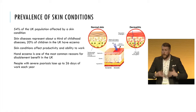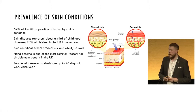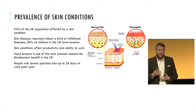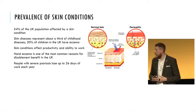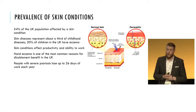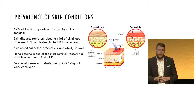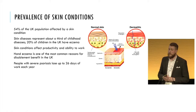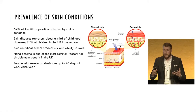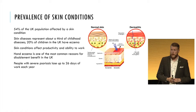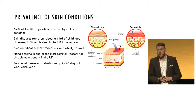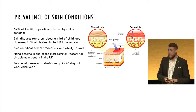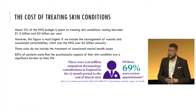Skin conditions have a major impact on people's everyday life, not only in terms of doing their normal activities, but also in terms of their ability to work and be productive. Hand eczema is one of the most common causes of disablement benefits in the UK, and severe skin conditions such as severe psoriasis can cause major disruptions to people's productivity and increase absenteeism, with some people spending as many as 26 days off work each year.